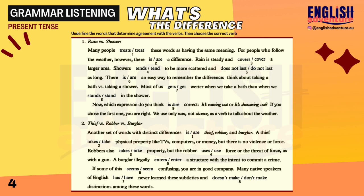Now, which expression do you think is correct — 'it's raining out' or 'it's showering out'? If you chose the first one, you are right. We use only 'rain,' not 'shower,' as a verb to talk about the weather.